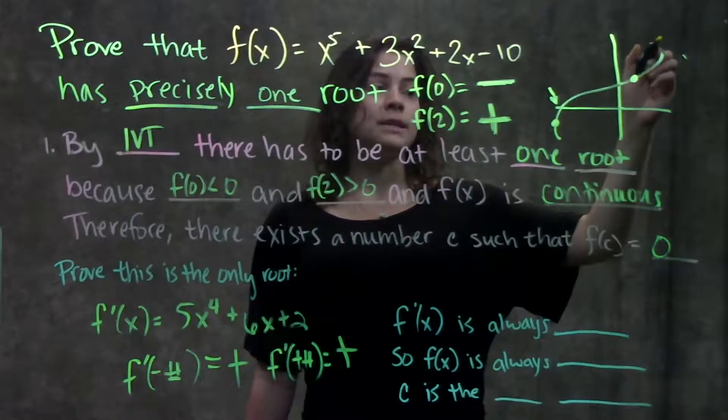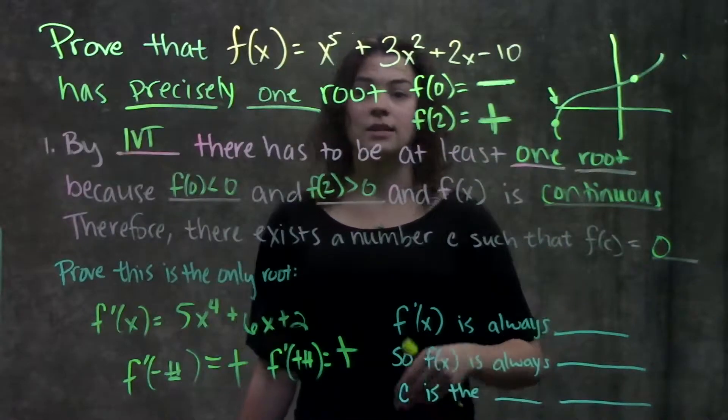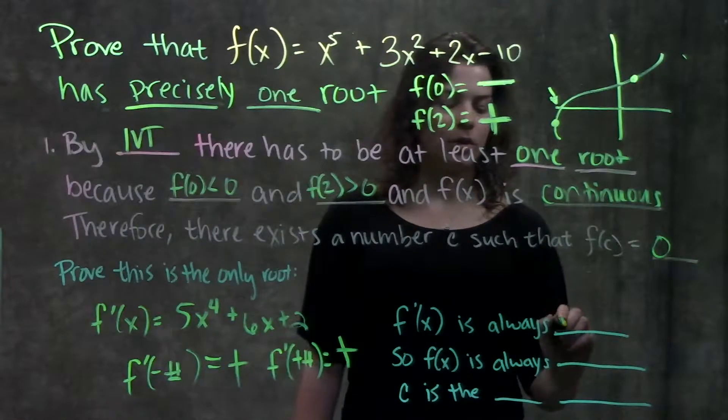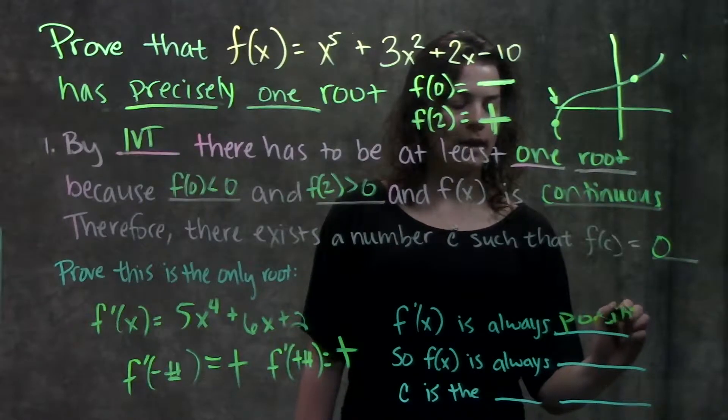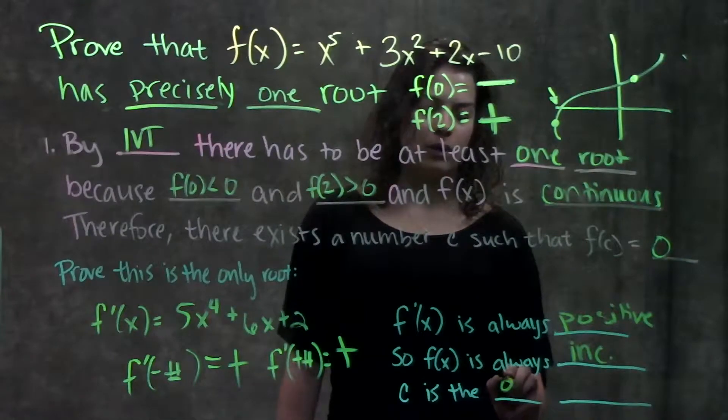So that tells us that our derivative is always positive and therefore our function is always increasing. Since it's always increasing, there's no way that it's ever going to turn back down and start decreasing and touch the x-axis again. So we can say f'(x) is always positive, so f(x) is always increasing, so c is the only root.